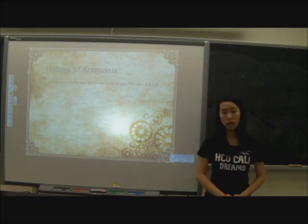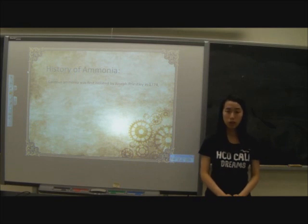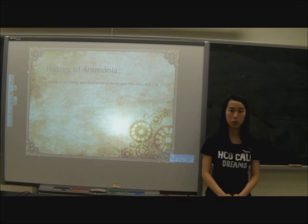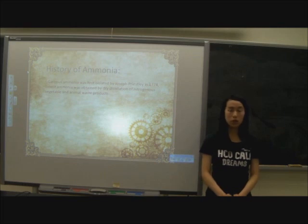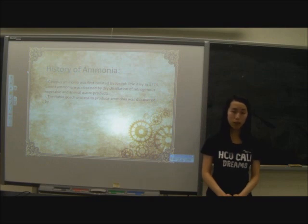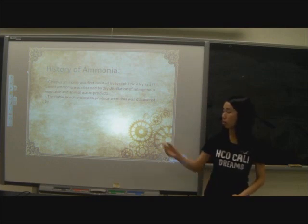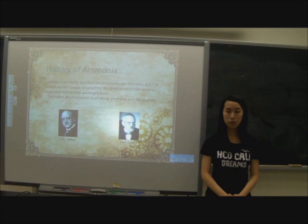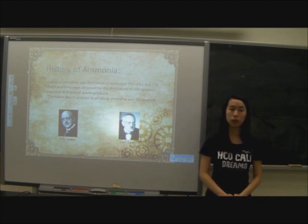Gaseous ammonia was first isolated by Joseph Priestley in 1774. Synthesis production has been studied as early as 1840, but only when studied from the standpoint of thermodynamic principles was it found to be commercially practical. Early in the 20th century, several chemists tried but failed to produce ammonia. The technical problems were first solved by Fritz Haber and Carl Bosch, who demonstrated their success first in the summer of 1909, producing ammonia at the rate of a cup every two hours. They were awarded Nobel Prizes.